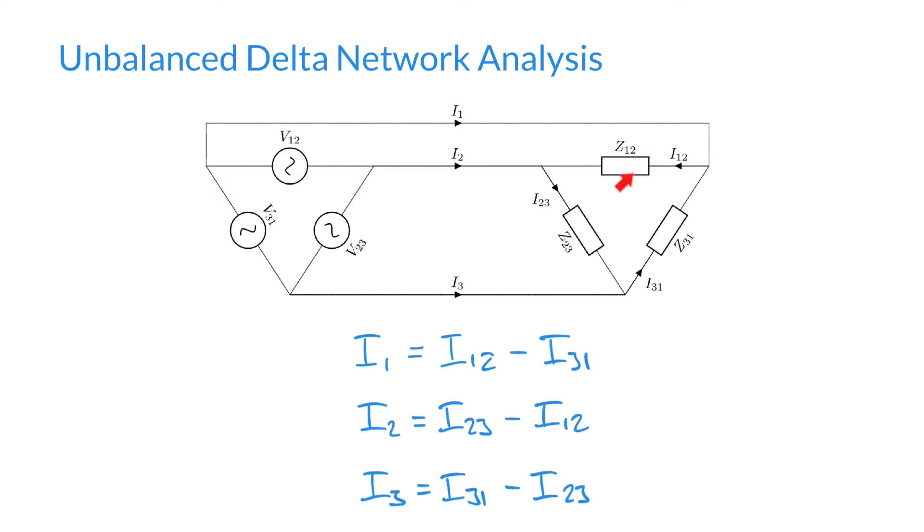We expressed those as the differences between the phase currents. So we had I1 equals I12 minus I31, I2 equals I23 minus I12, and I3 is equal to I31 minus I23. If you're not sure about this notation or what these terms mean, we explain that in much more detail in the previous video.